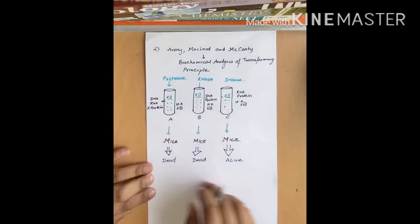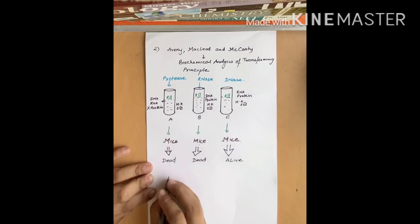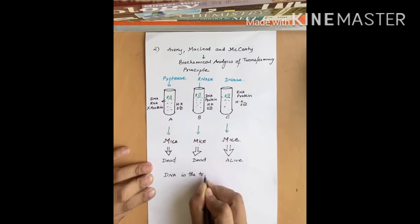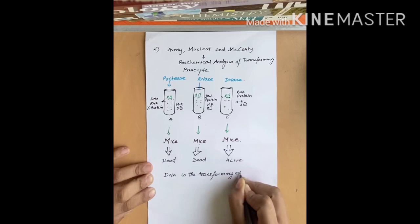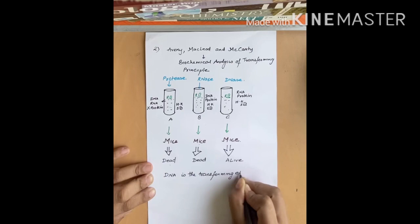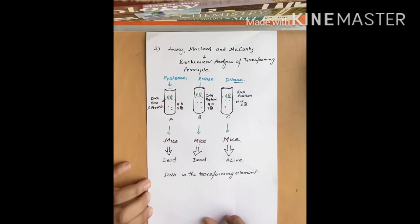From this entire experiment, Avery, McLeod, and McCarty concluded that DNA is the transforming element. Because in test tube C the R strain was not transformed into the S strain and the mice were alive. However, this theory was opposed by different scientists who didn't agree that DNA is the transforming element. The fact that DNA is the genetic material was finally proved by Hershey and Chase, which we will see in the next video along with the semi-conservative mode of replication. Thank you and keep watching Botany Blaze for upcoming molecular biology lectures.